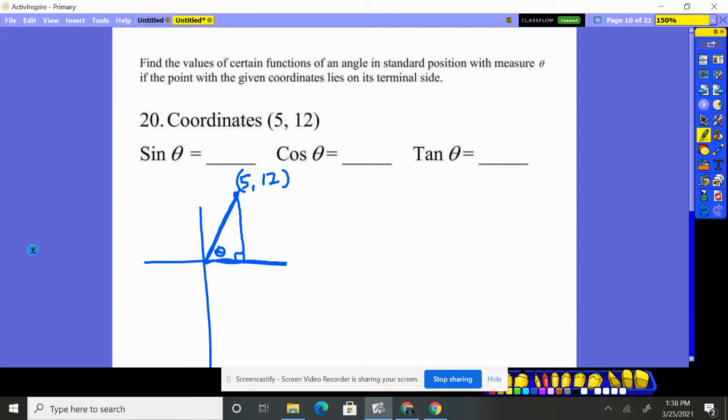We need these measurements. So we need to figure out these three legs. Well, we already know two of them. We went over 5. So that length is 5. We went up 12. That length is 12.